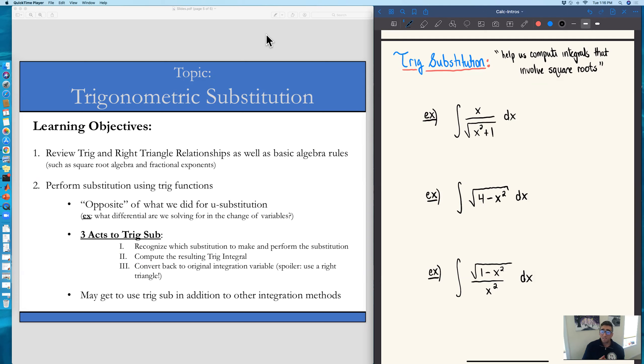Our learning objectives for this segment are really reviewing a lot of our trig identities as well as right triangle relationships with trig functions. So like, what is sine in terms of the parts of a right triangle? What is cosine, tangent, cosecant, all of that jazz? We're also going to be practicing some of our basic algebra rules, which a lot of times involve square root type operations.